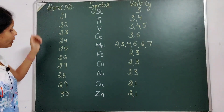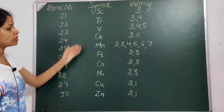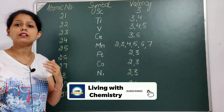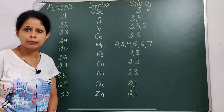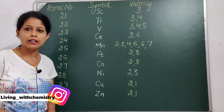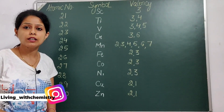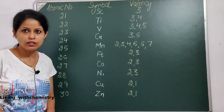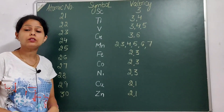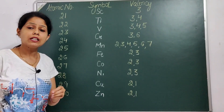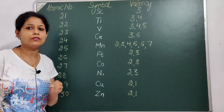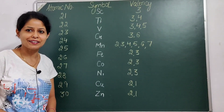Here I have already written the atomic numbers, symbols, and valencies of elements 21 to 30. Now I will discuss the trick to learn the valency of these elements. These elements belong to the D-block, which is also called transition elements. Elements with atomic number 21 to 30 are also called the first transition series.